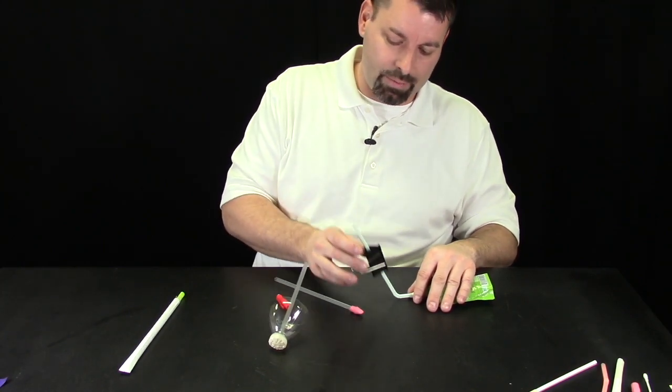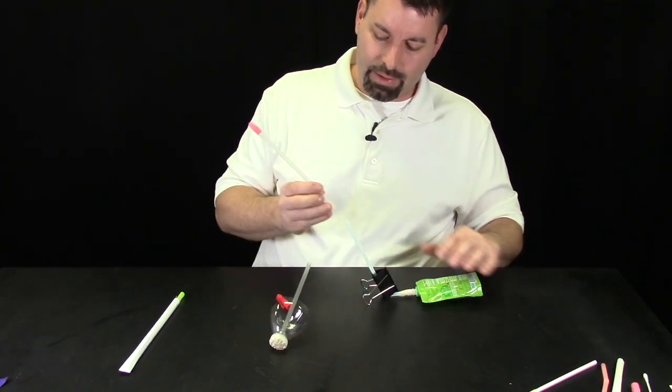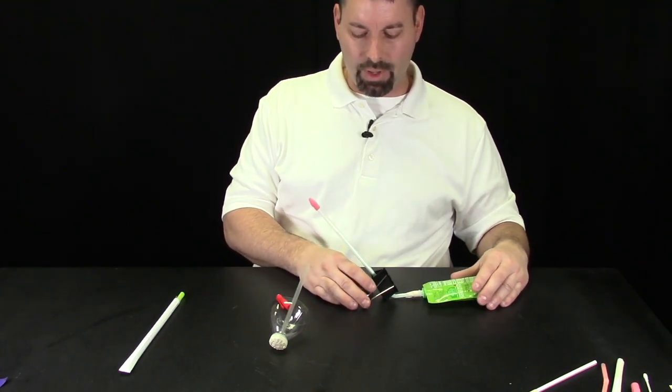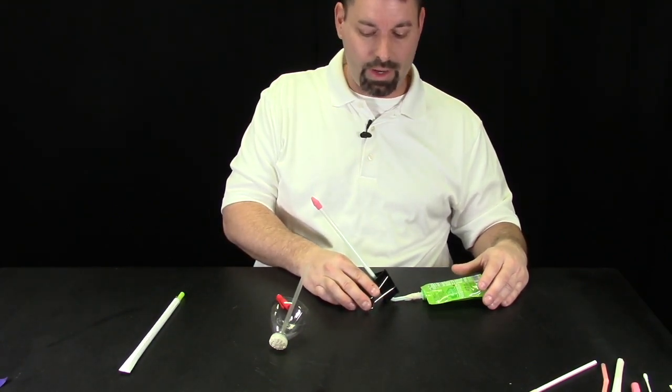Now in part one of our video we showed you we could attach a paper clip. We came up with another system here. Here's a binder clip that's going to act as a brace. It's going to stabilize, give me something to hold on to and now I can try launching.